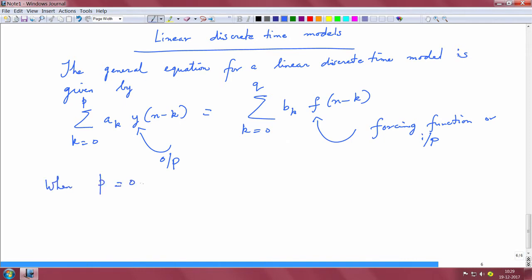When p equals 0, equation 1 is a moving average. When p equals 0, basically you're looking at one term and the scalar a_0 can be pulled outside. You just have y_n and this is basically the average of the forcing function. There is some weight to this average via these b_k coefficients. When p equals 0, equation 1 is a moving average signal.